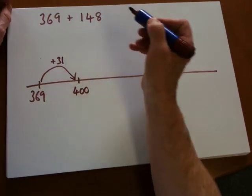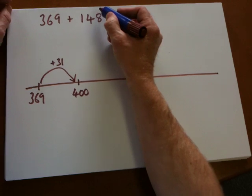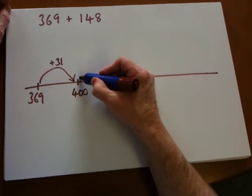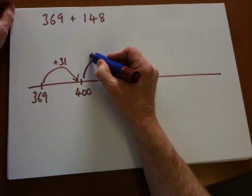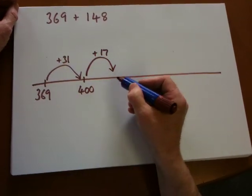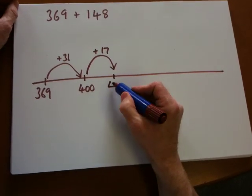So we've got 148. We've added 31. Well, let's just look at the 48. We could add 17 on. So now we've added 48 altogether. That gets us to 417.